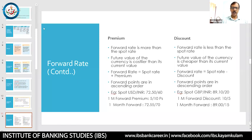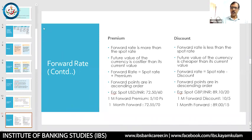Now, forward rates: the forward rate is the future rate and it can be more or less than the spot rate. If the future rate is more than the spot rate, the currency is at a premium. If the future rate is less than the spot rate, the currency is at a discount. Example: spot USD/INR 72.50/72.60. One month forward premium is 5/10 paise — meaning 5 paise buying premium and 10 paise selling premium. To get the one-month forward buying rate, take spot buying 72.50 and add 5 paise to get 72.55. To get the selling rate, take 72.60 and add 10 paise to get 72.70. One-month forward rate is 72.55/72.70.